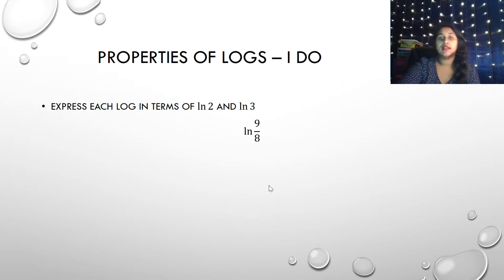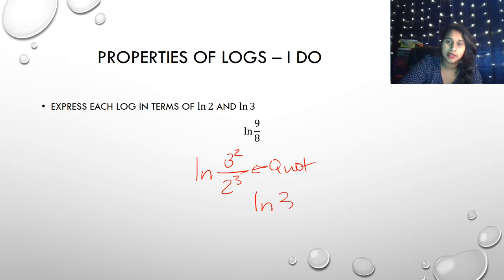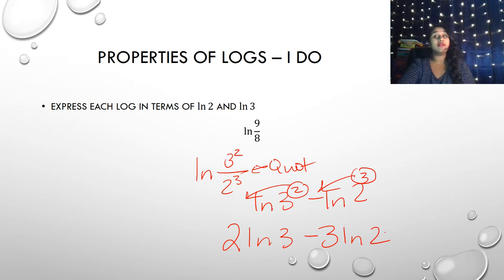I've got one more for us. The ln of 9 over 8. What can I do to 9 to make it look like 3? That's 3 squared. What about 8? That's 2 cubed. So that becomes the ln of 3 squared over 2 cubed, which is a quotient property right there. That's our quotient rule, which tells me I can subtract. So that's the ln of 3 squared minus the ln of 2 cubed. Then I can use the power rule to rip it to the front for both of them. So that becomes 2 ln of 3 minus 3 ln of 2. That was a little confusing because there's a lot of 3s and 2s all over the place, but I hope you were able to follow that.